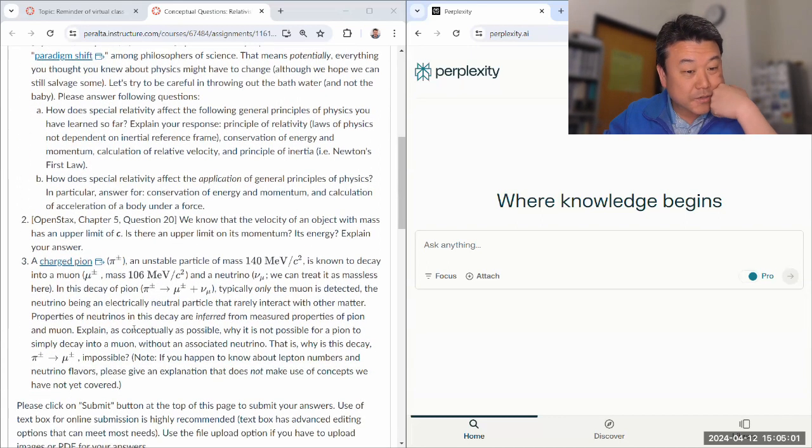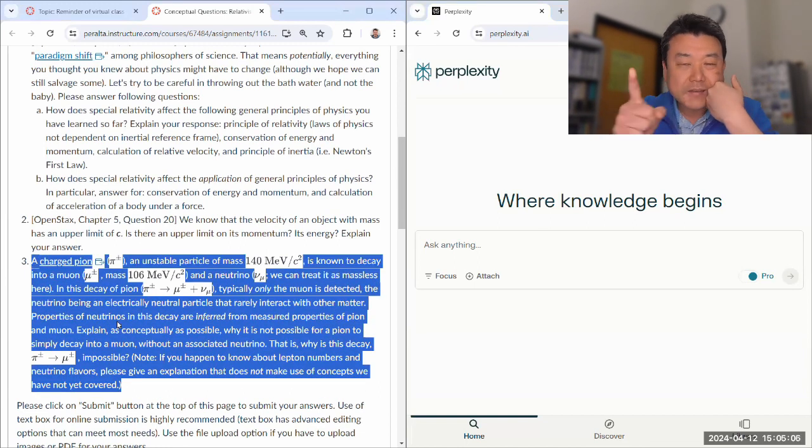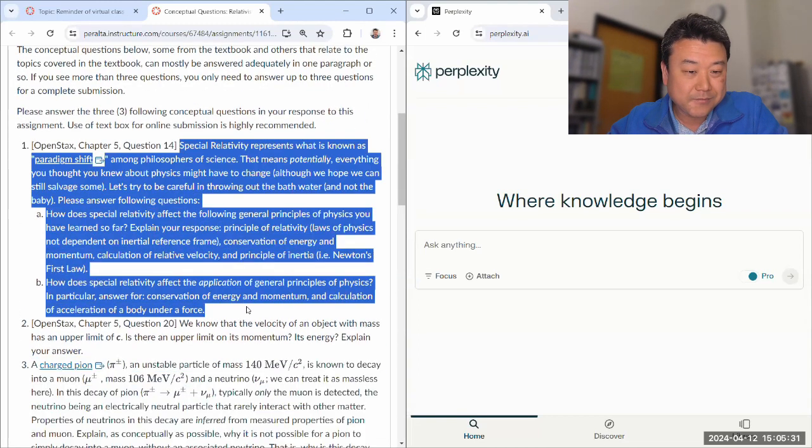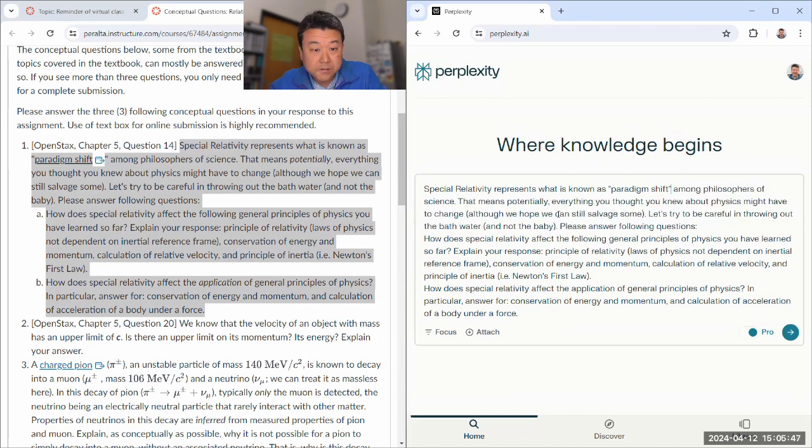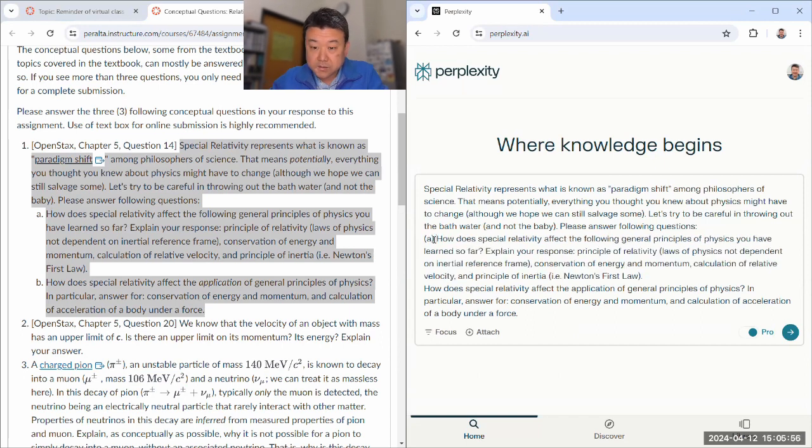I think the last question is, I think this is the question that ChatGPT didn't answer well. And I really wanted, yeah, because ChatGPT would try to answer this with the idea of lepton flavor conservation, which is valid. But at this point in the semester, we wanted to use conservation of energy and momentum. So we'll see how well Perplexity does there when we get to that question. So let me start out with our very first question.